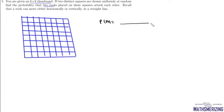First we'll find the total number of ways in which we can place two rooks on these two squares. Altogether there are 64 squares, and from these 64 squares we need to select any two squares to place the two rooks. So it can be done in 64C2 ways.